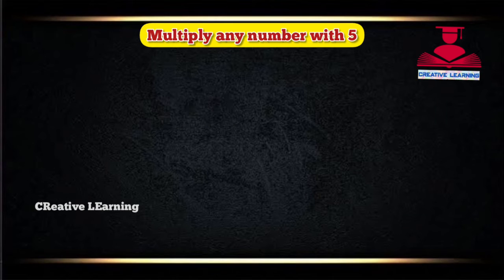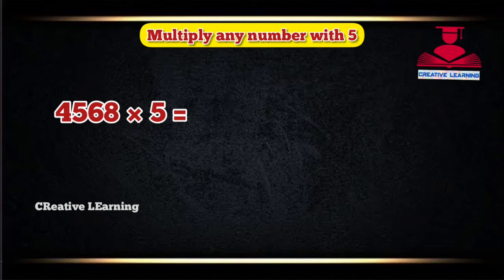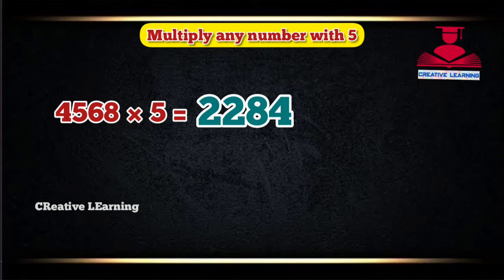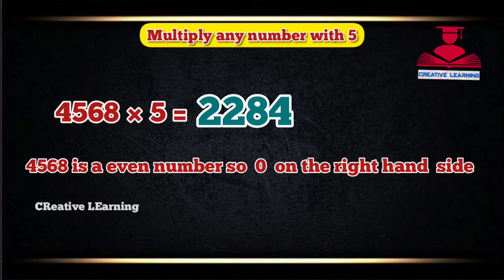Let's multiply 4568 into 5. Half of 4568 equals 2284. 4568 is an even number, so 0 on the right-hand side. Our answer is 22840.